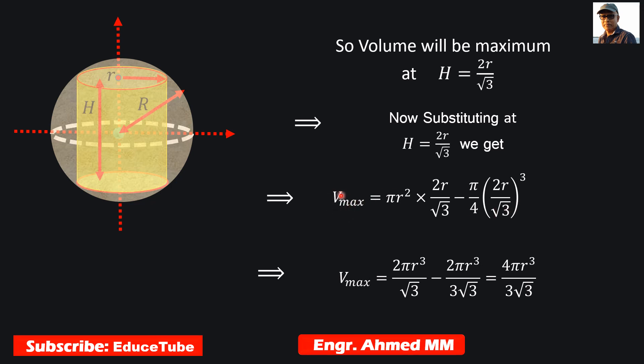This was our volume equation. Replacing H, at the end we got V_max = 4πr³/(3√3). This is the result we were expecting, and this is the maximum volume for this inscribed circular cylinder in the sphere.